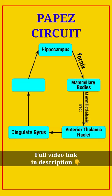The cingulate gyrus, which is another important component of the limbic system, sends its axons to the entorhinal cortex and stimulates it. And then neurons of the entorhinal cortex further connect with the hippocampus. So this completes the circuit.